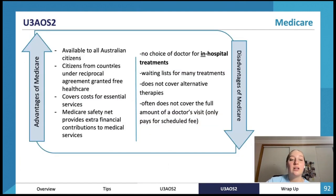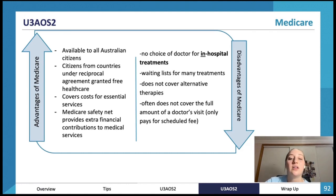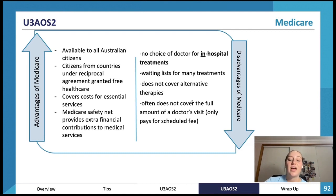Advantages of Medicare: it's available to all Australians and those from reciprocal agreement countries. It covers costs for essential services. There's a Medicare safety net providing extra financial contributions for those who have spent over a certain amount. Disadvantages: there's no choice of doctor for in-hospital treatments, waiting lists for many treatments are quite long, it doesn't cover alternative therapies, and it often doesn't cover the full amount for a doctor's visit — only the schedule fee.